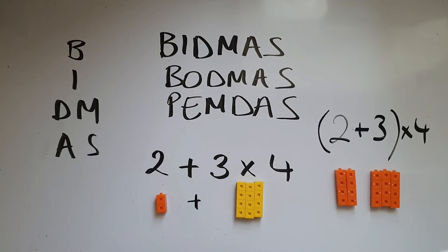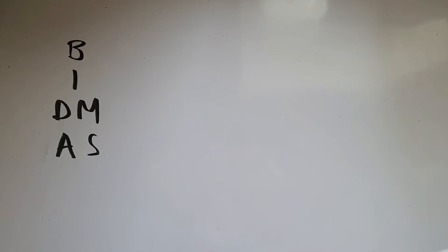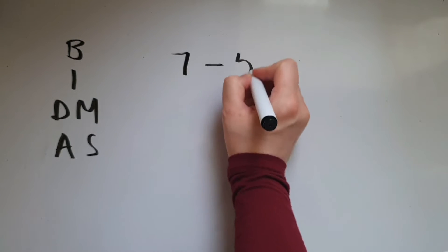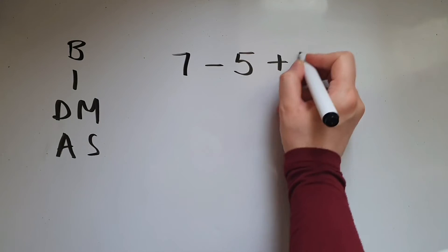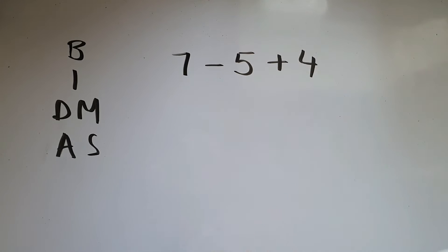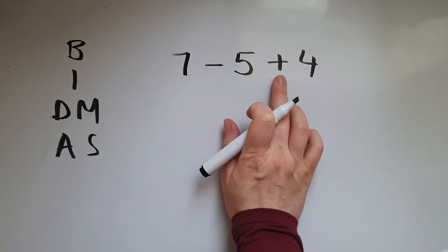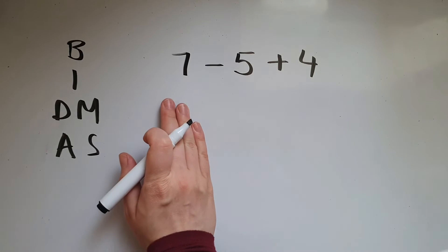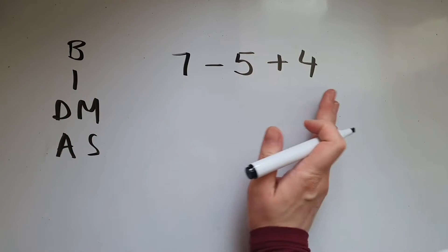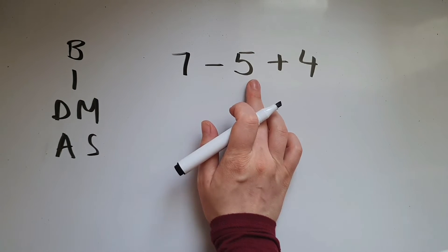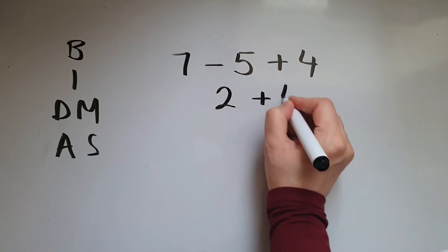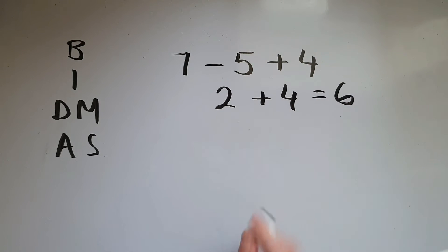We'll do a few examples together. If I have 7 take away 5 add 4, I've got subtraction and addition, so I'm going to do them starting from the left. So 7 take away 5 gives me 2, add 4 makes 6.